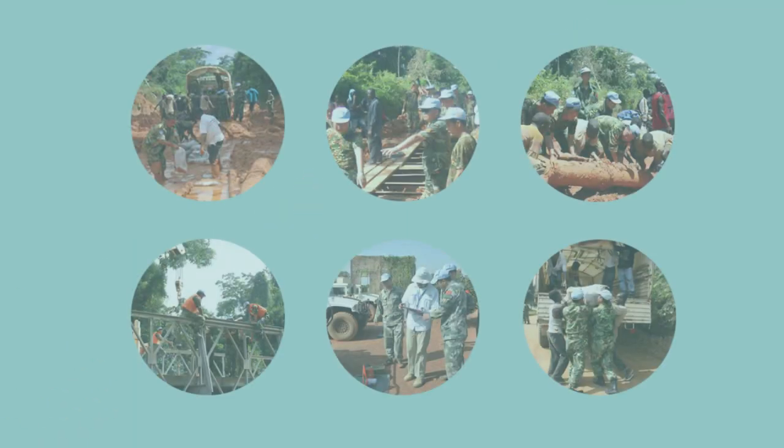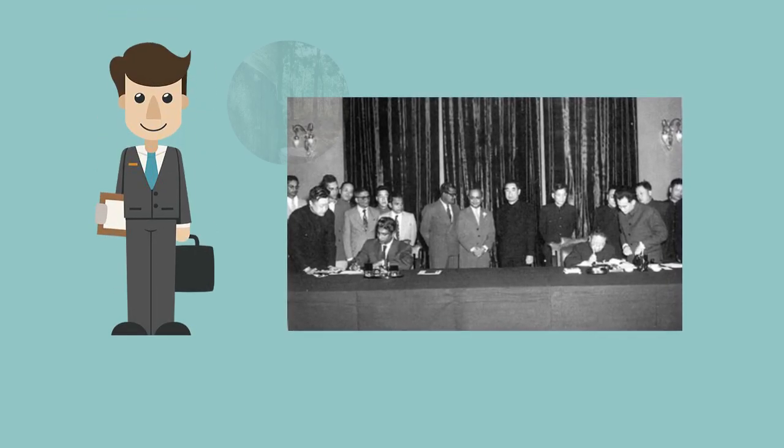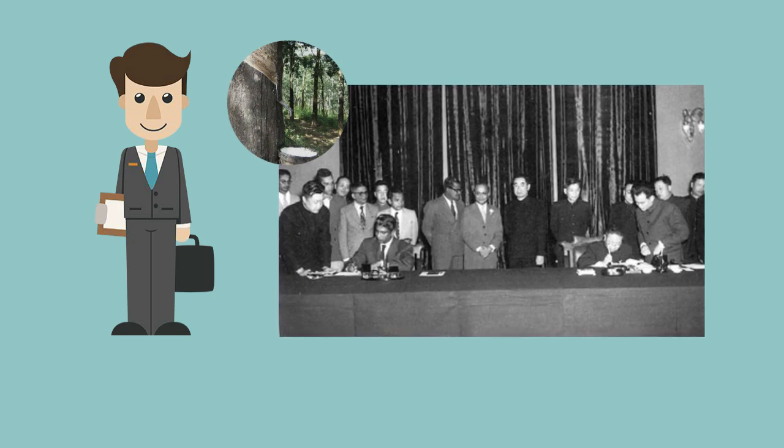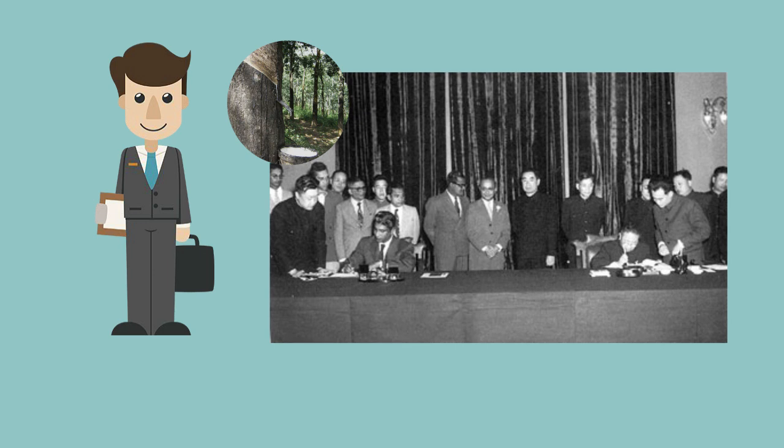Since the 1950s, China has prioritized giving foreign aid to other developing countries in the form of economic cooperation. A good example of this cooperation would be the Rubber Rice Pact that China signed with Sri Lanka in 1952 to facilitate the exchange of Chinese rice for Sri Lankan rubber.